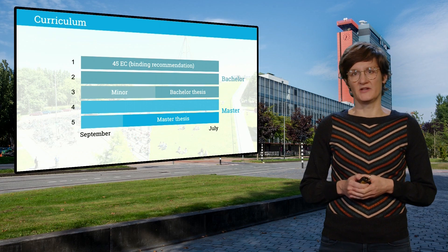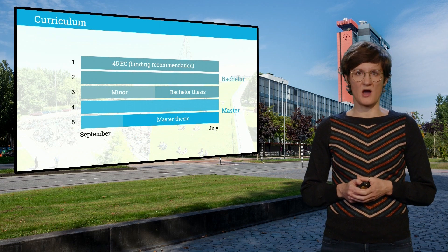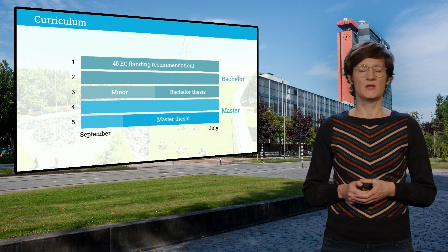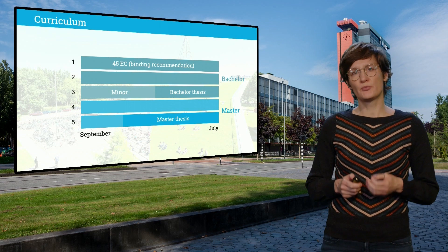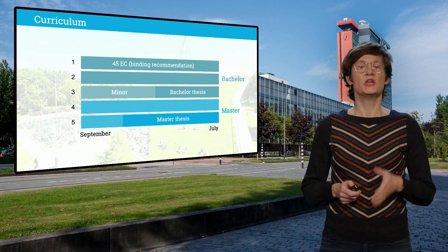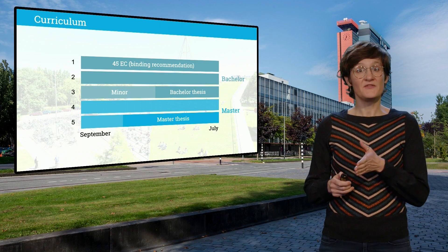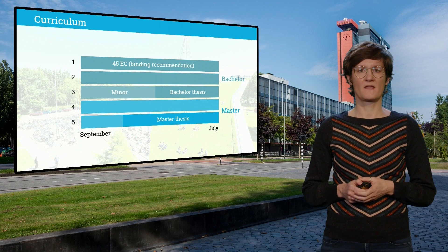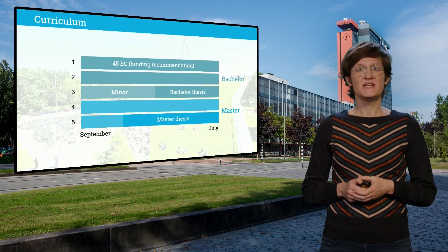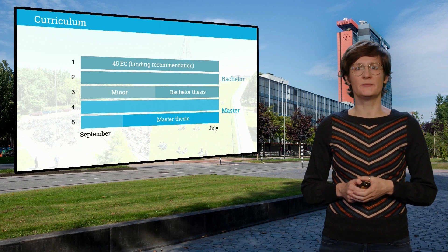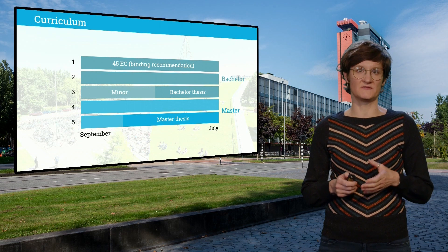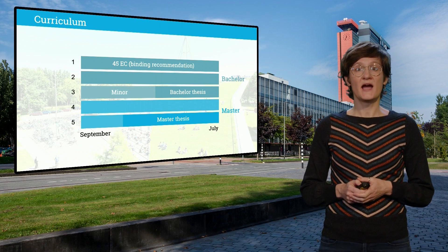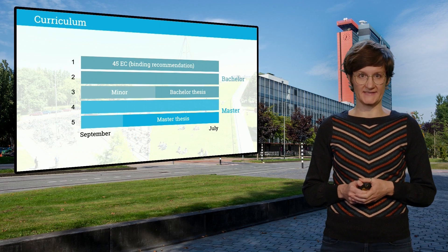The systems variant teaches you more about hardware as well as optimizing software for hardware systems. During the project in this elective variant, you will make a robot which navigates a maze with a smartphone camera. The data variant teaches you how a computer can deal with large quantities of data efficiently, how you can collect data intelligently, and how you can extract useful patterns from the data.